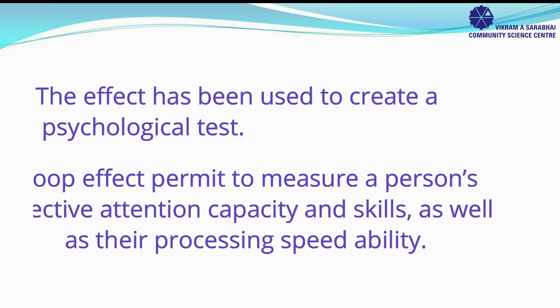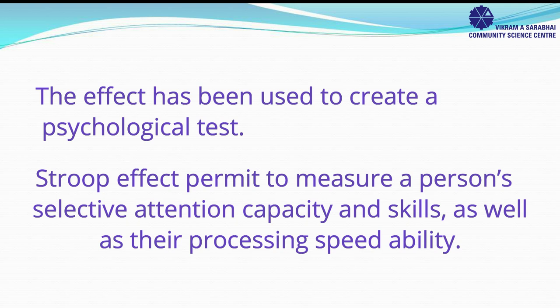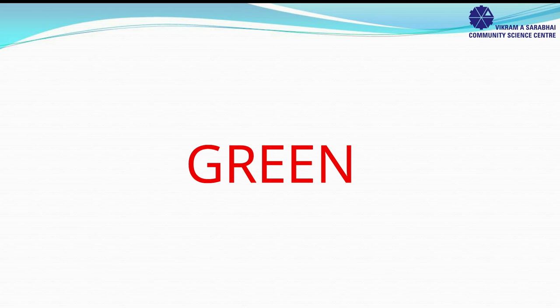The Stroop effect permits measuring a person's selective attention capacity and skills, as well as their processing speed ability. Here you can see the word green which appears in ink color red. The task is to name the color of the ink for each word, so here you have to read it as red, not green.